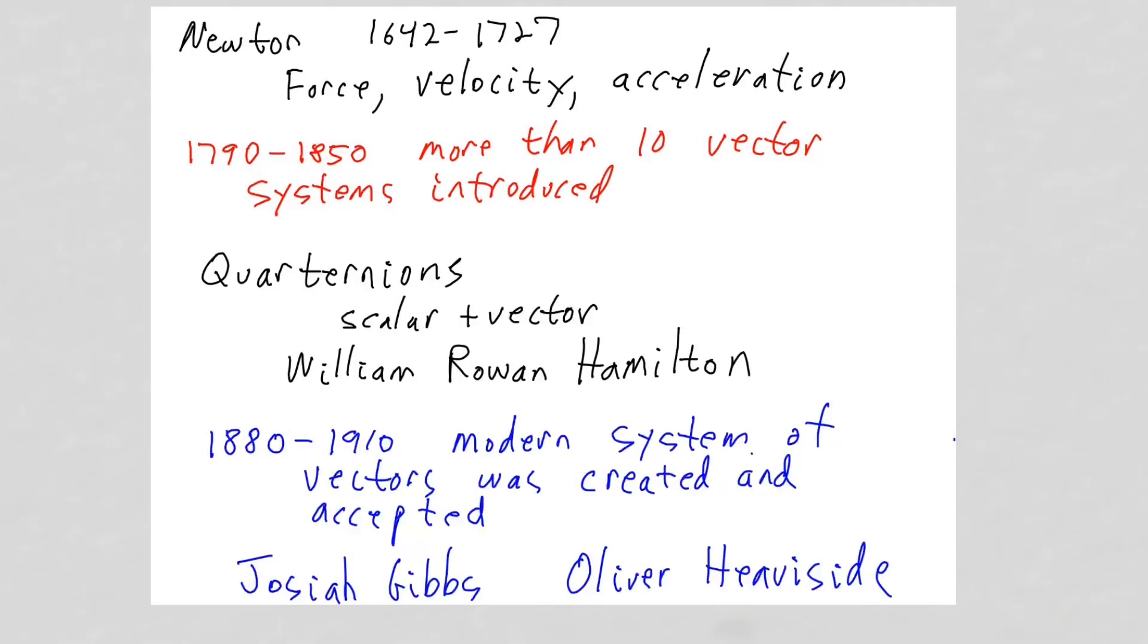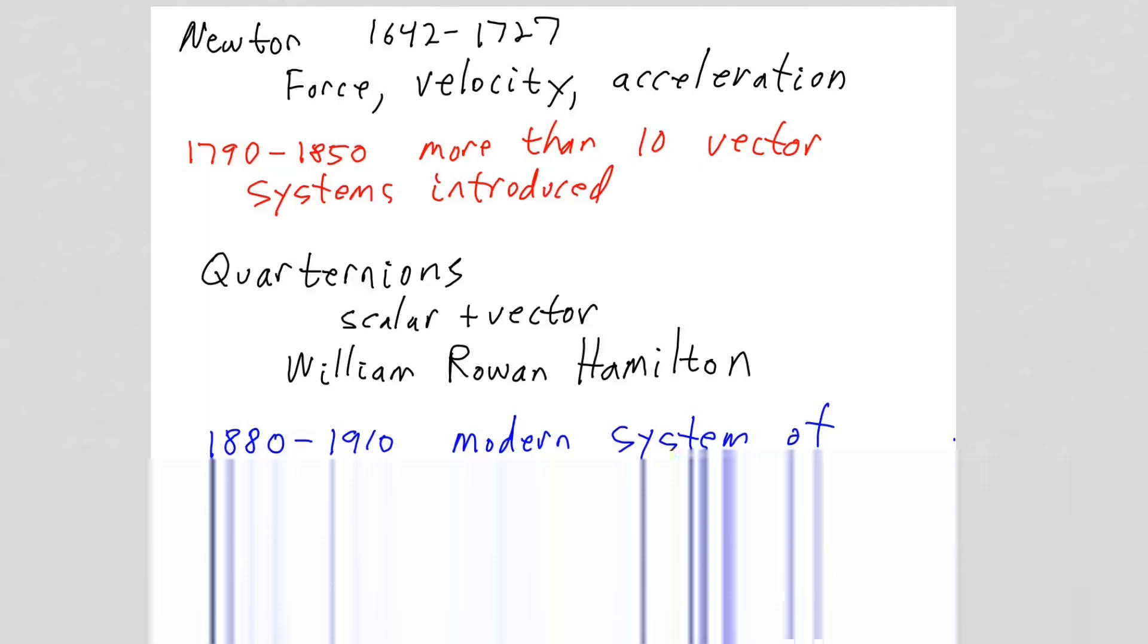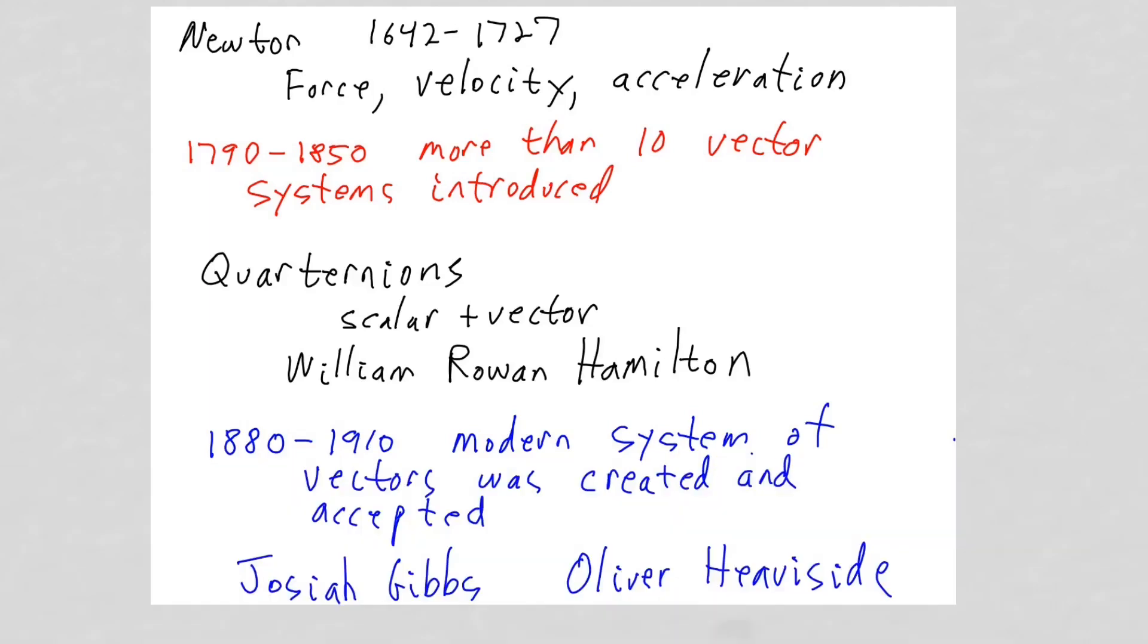Our modern system of vector representation and analysis was independently developed by Josiah Gibbs at Yale and Oliver Heaviside in London. Since Gibbs and Heaviside's system of vector representation and analysis was conceptually simpler and notationally cleaner, it displaced the use of quaternions over the period of 1880 to 1910.